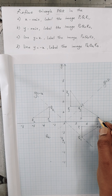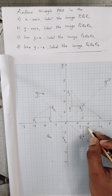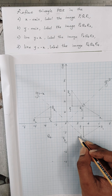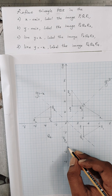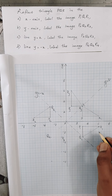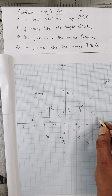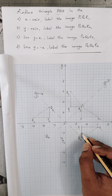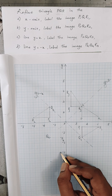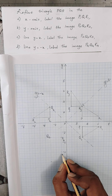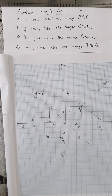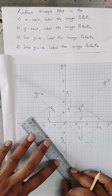For point R, we count the diagonal distance perpendicular to the mirror line — it's 3 and a half units. Remember, we are crossing the diagonal and this is not exactly 3 units as measured on the axis, but it's a diagonal distance. We count the same 3 and a half units to the opposite side, and label that point R4. Joining these three points, you get the image triangle P4, Q4, R4.